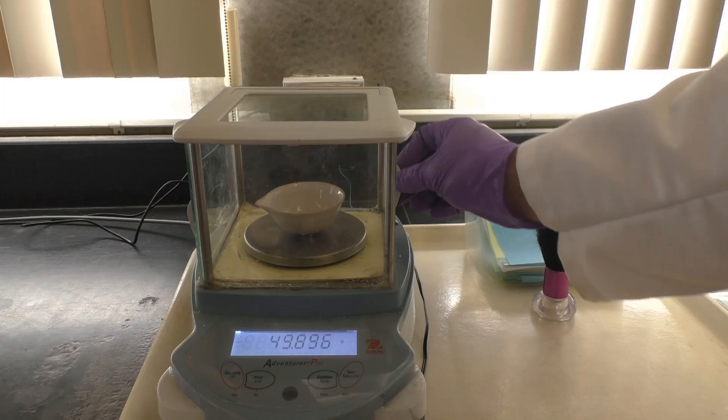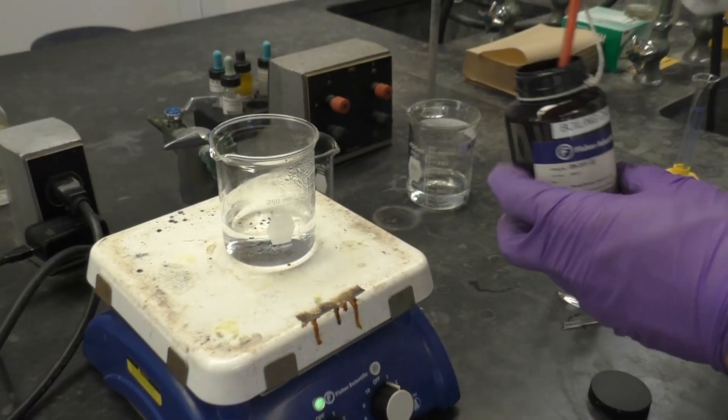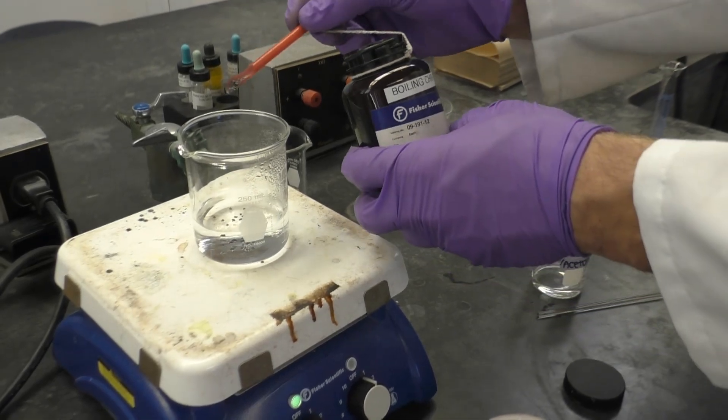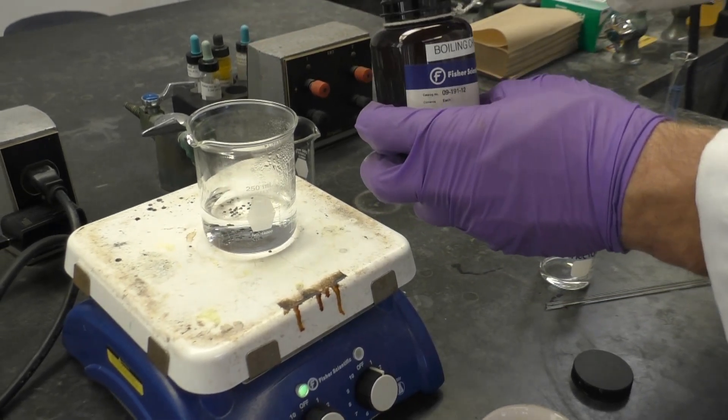While you're waiting for your evaporating dish to cool, obtain a 250 milliliter beaker, put a few boiling chips in it, and then begin heating about 100 milliliters of water for a steam bath to dry your copper.